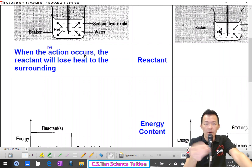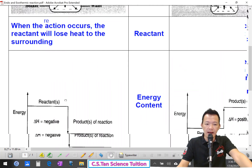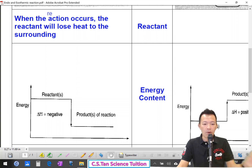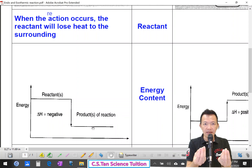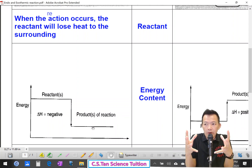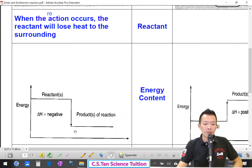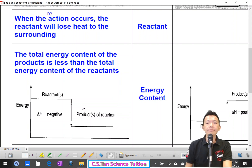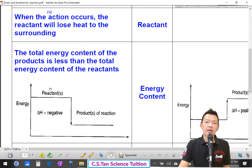Since the reactant lost the heat energy, what happened to the product? 它的 product 的能量多还是少呢? You look at the diagram. During the chemical reaction, the reactant lost the heat energy. Because the reactant lost the heat energy, this is what we call the heat of reaction is negative. 化学反应的热能的改变是 negative. So the product will have lower energy content — 它的 product 的能量就降低了.